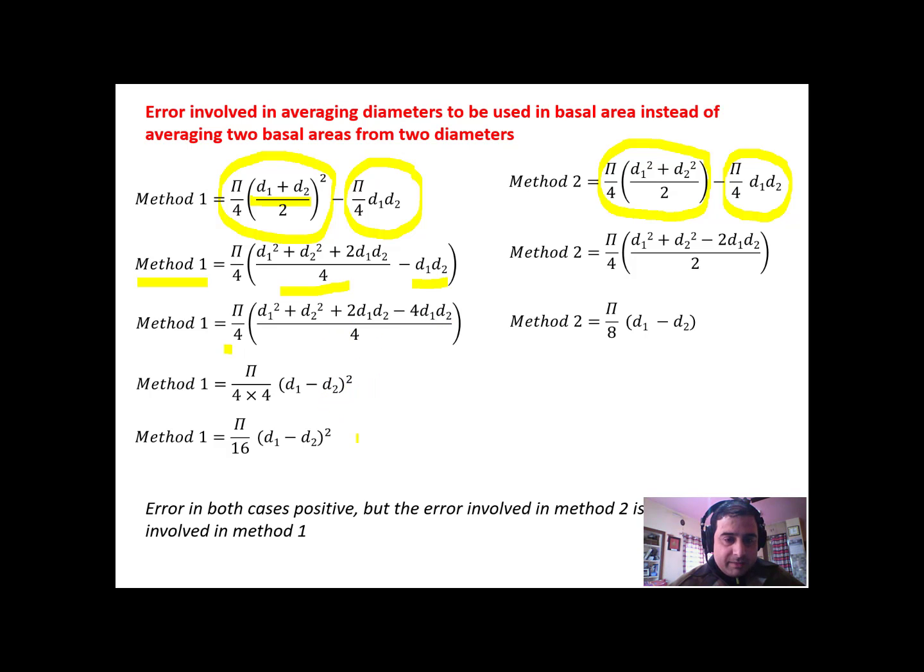Further solving it, ultimately we get a term pi by 16, we get a term pi by 16 d1 minus d2 square.